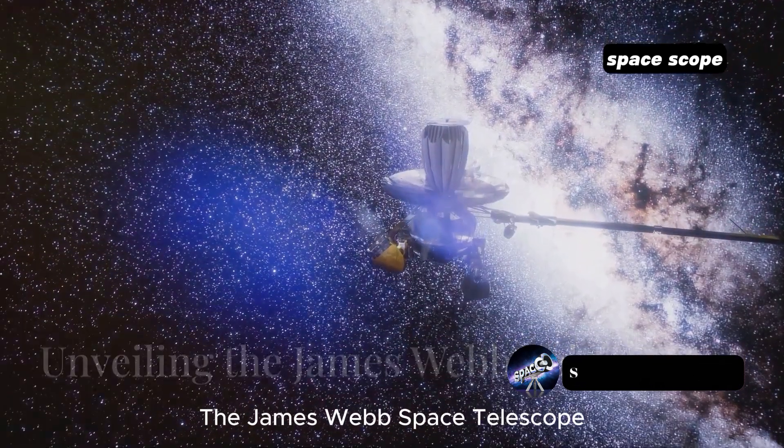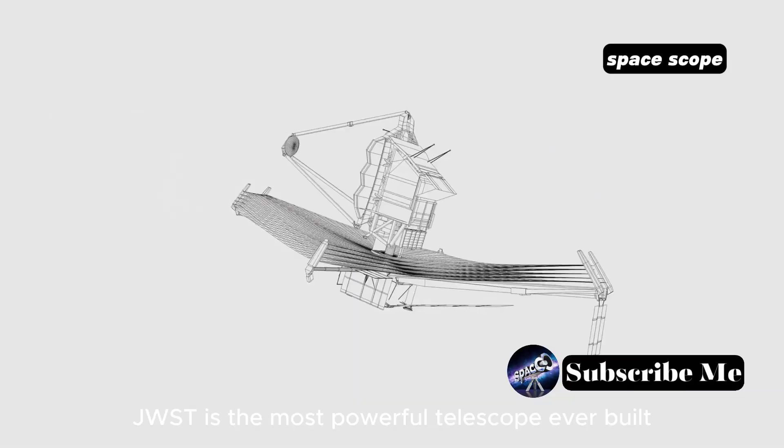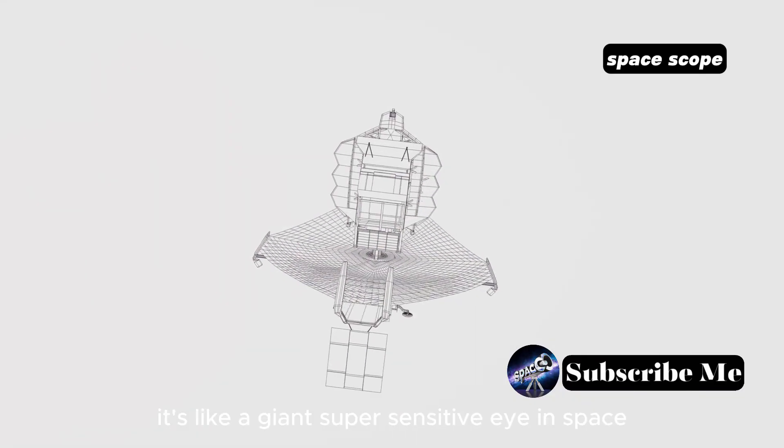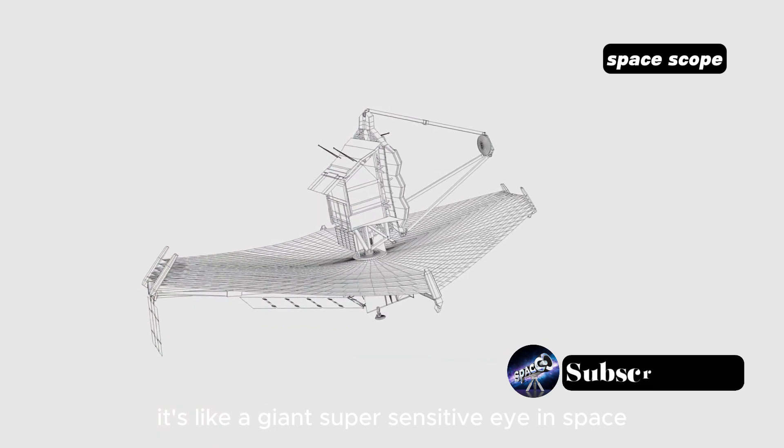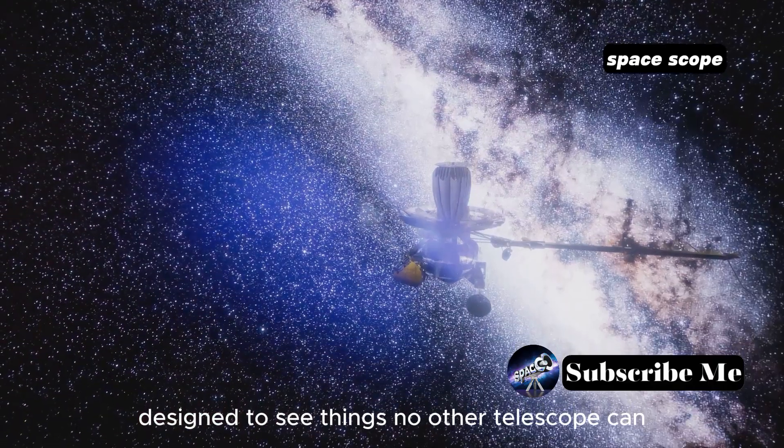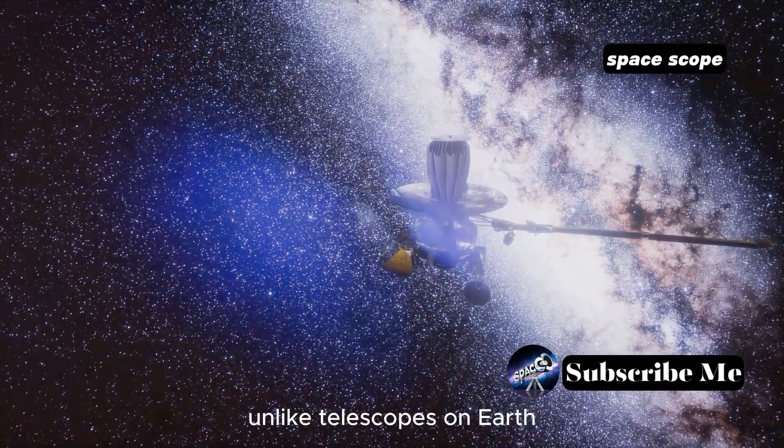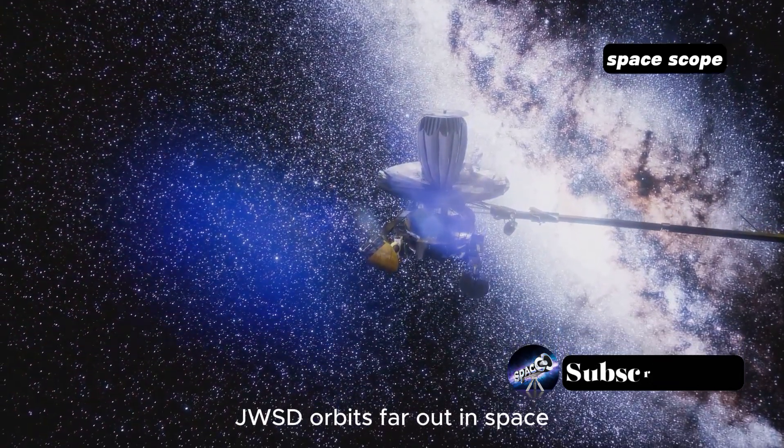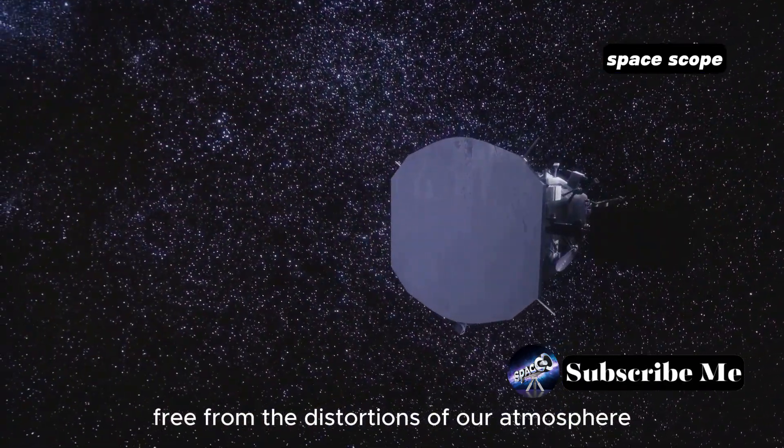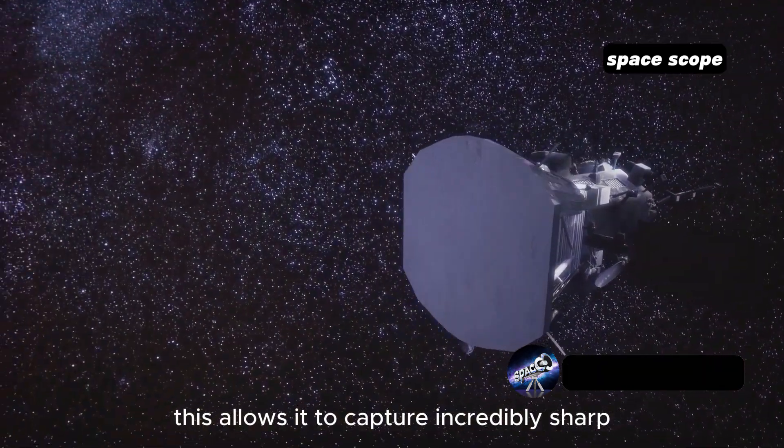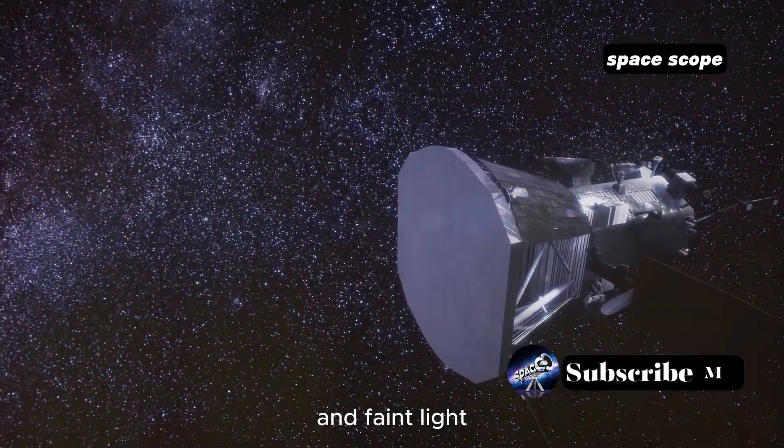The James Webb Space Telescope, JWST, is the most powerful telescope ever built. It's like a giant super-sensitive eye in space, designed to see things no other telescope can. Unlike telescopes on Earth, JWST orbits far out in space, free from the distortions of our atmosphere.